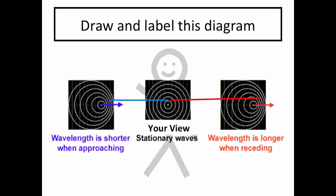Go ahead and pause the video and draw and label this diagram. There's you and your view of stationary waves. When you have an object moving towards you, the wavelength is getting shorter, so it is blue.